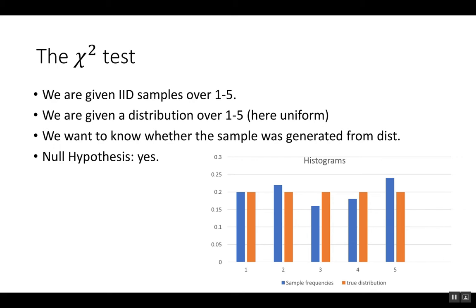The null hypothesis is that yes, it comes from that distribution, and the alternative is no, it does not come from that distribution.